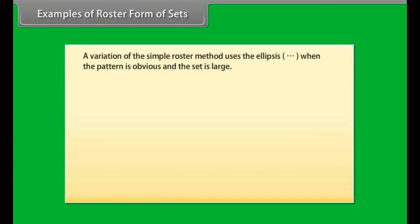Examples of roster form of sets. A variation of the simple roster method uses the ellipsis when the pattern is obvious and the set is large.